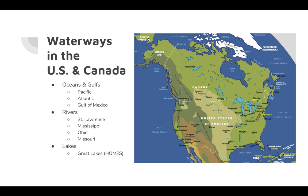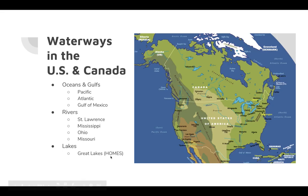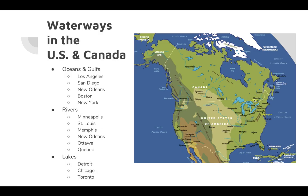We also have lakes, and the major lakes in North America are the Great Lakes — Huron, Ontario, Michigan, Erie, and Superior. These are great for trade routes too, and you can see all of the cities that are around the Great Lakes.